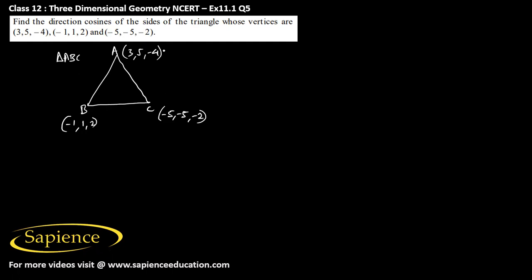It has been asked to find the direction cosines of the sides of the triangle. We need to find the direction cosines of sides AB, BC, and CA. Therefore, first we need to find the direction ratios.